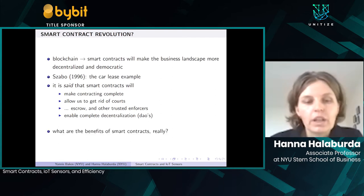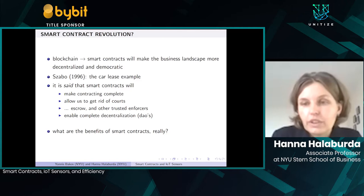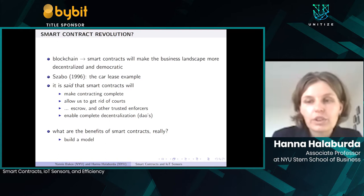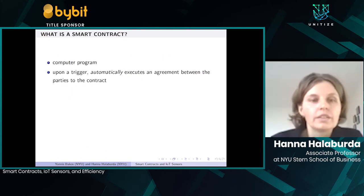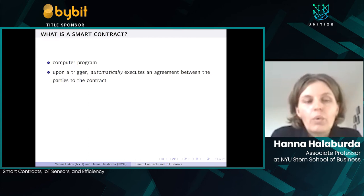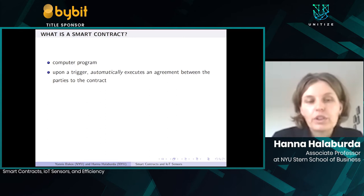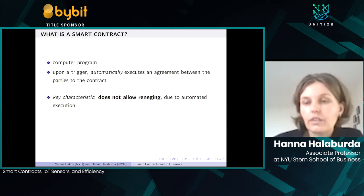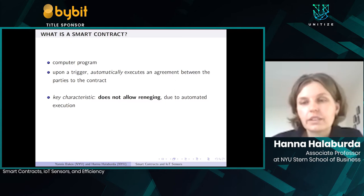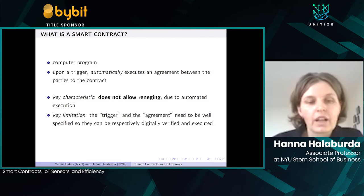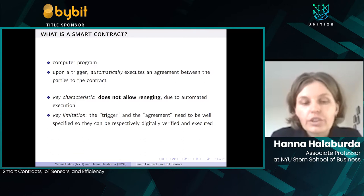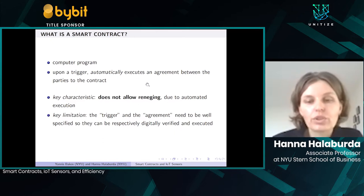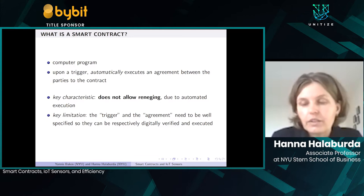What we have set out to do is analyze what the benefits of smart contracts really are. For that, we build a model where we distinguish the benefits of smart contracts from other technologies. A smart contract is basically a computer program that, upon a trigger, automatically executes an agreement between two parties. The key characteristic we draw upon is that it does not allow reneging because it is automated. One important limitation is that the trigger and the agreement need to be well-defined and digital.